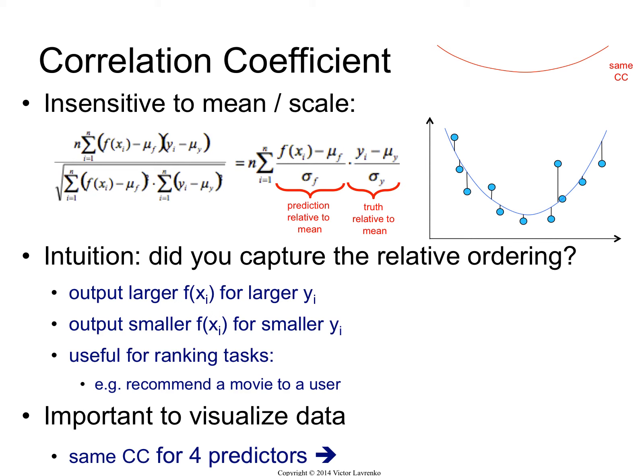So in this case, if the circles are the true points, the blue curve is one system, the red curve is another system. These two systems will have the same correlation coefficient with the data.